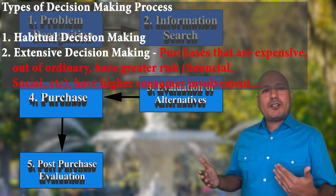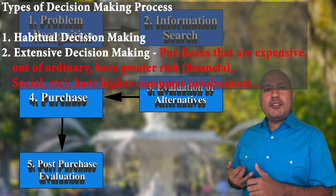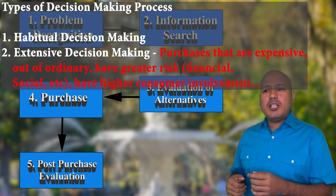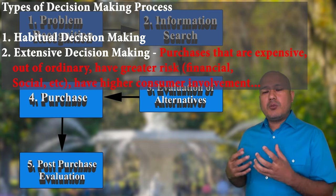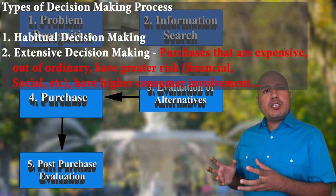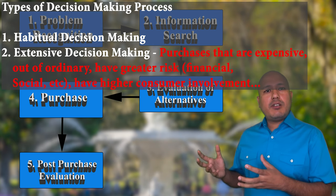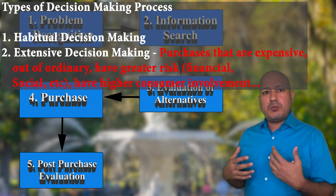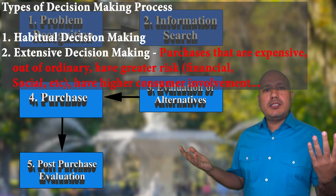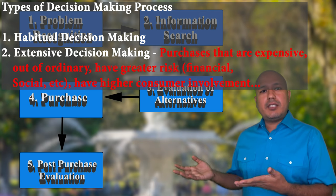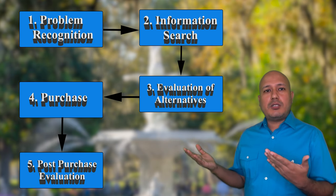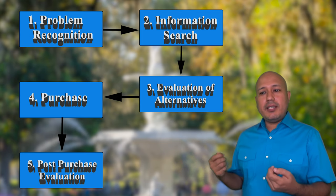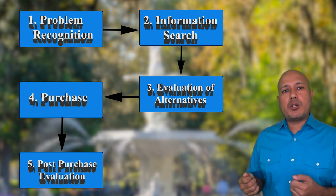So these are the five steps of the consumer decision-making process: problem recognition, information search, evaluation of alternatives, purchase, and post-purchase behavior. In other videos, we'll also talk about what are the sources of information, how people evaluate between different alternatives, what affects their post-purchase evaluation, and what makes the consumer decision-making process simple or complex. When I buy milk, it's a very simple process — maybe three seconds of thinking — versus buying this television, where the process has gone on for almost two months. So the decision-making process will be different for different people.